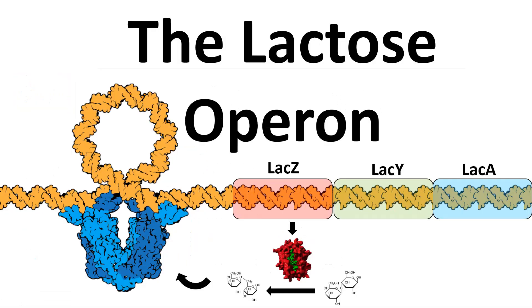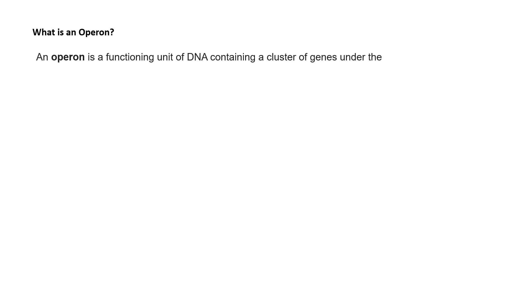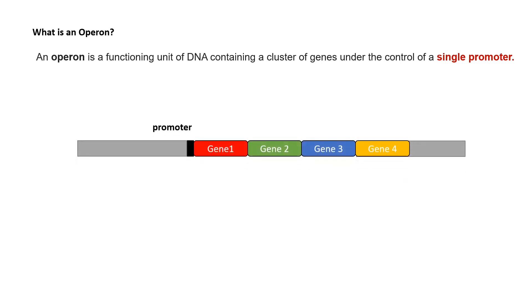In this video I'll talk about the lactose operon. An operon is a set of genes controlled by a single promoter. For example, if we have a promoter and genes 1, 2, 3, and 4 are all under the control of that same promoter, where expression of all these genes depends on this unified promoter, then this kind of arrangement is known as an operon system.